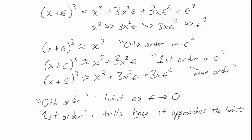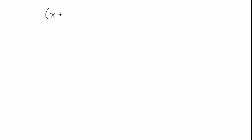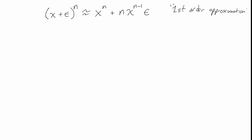A useful formula for making first order approximations is: if you have (x plus epsilon) to the nth power, this can be approximated as x to the nth plus n times x to the (n minus 1) times epsilon. This is a first order approximation because there is just the first power of epsilon, and it assumes that epsilon is much smaller than x.